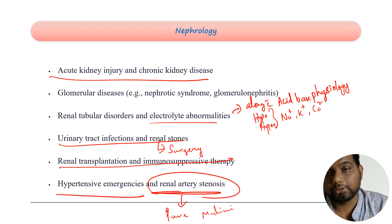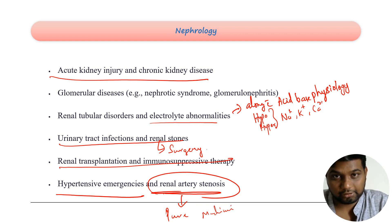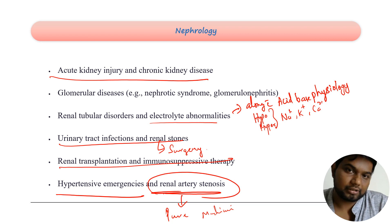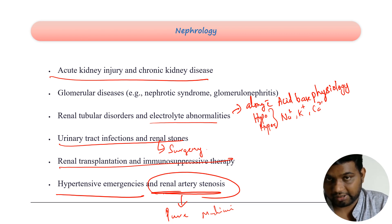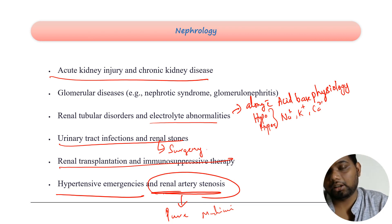Hypertensive emergencies and renal artery stenosis are pure medicine topics — all complications of renal artery stenosis, what type of things you may expect to see in the patient, you have to read in medicine. Renal artery stenosis, nephrotic/nephritic syndrome, AKI, and CKD are the topics of interest in the medical part of kidney disease. Electrolyte abnormalities — hypo/hypernatremia, hypo/hyperkalemia, hypo/hypercalcemia — their features and management should be studied along with acid-base physiology and pathology.